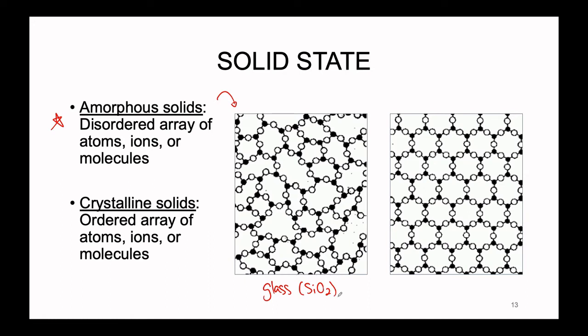Glass, as well as a great number of other amorphous solids, have a shape that is inconsistent in arrangement. There's no common pattern, no long-term pattern seen here. The silicons and the oxygens seem to just be kind of haphazardly stuck together. How this happens is because the solid was very rapidly cooled.